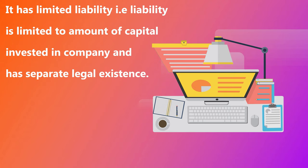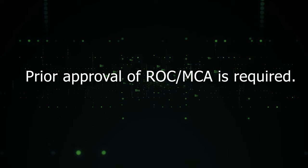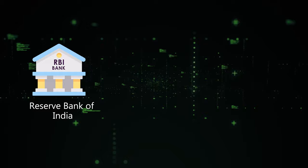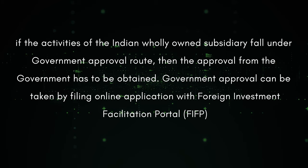Approvals required: For setting up WOS in India, prior approval of the Registrar of Companies, Ministry of Corporate Affairs is required. Also, approval of RBI, AD banker, and the Foreign Investment Facilitation Portal may be required in case of the government approval route. Further, if the activities of the Indian wholly owned subsidiary fall under the government approval route, then approval from the government must be obtained.